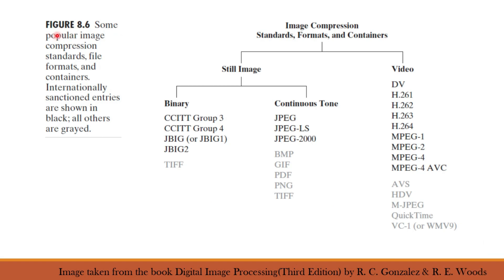This figure shows some popular image compression standards, file formats and containers. The internationally approved entries are shown with black text and all others are shown in grey text. The standards for still images or pictures and motion images or videos are different. Still image standards can be further categorized into binary image standards and continuous tone image standards. The binary image is also known as a bi-level image since it has only two levels: 0 for black and 1 for white. Continuous tone images are either grayscale images or color images.